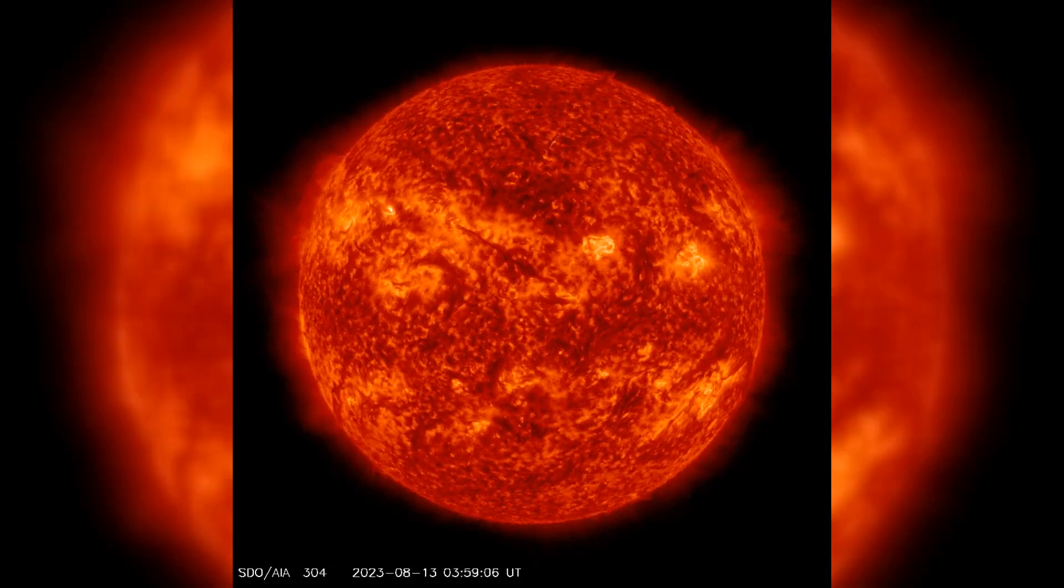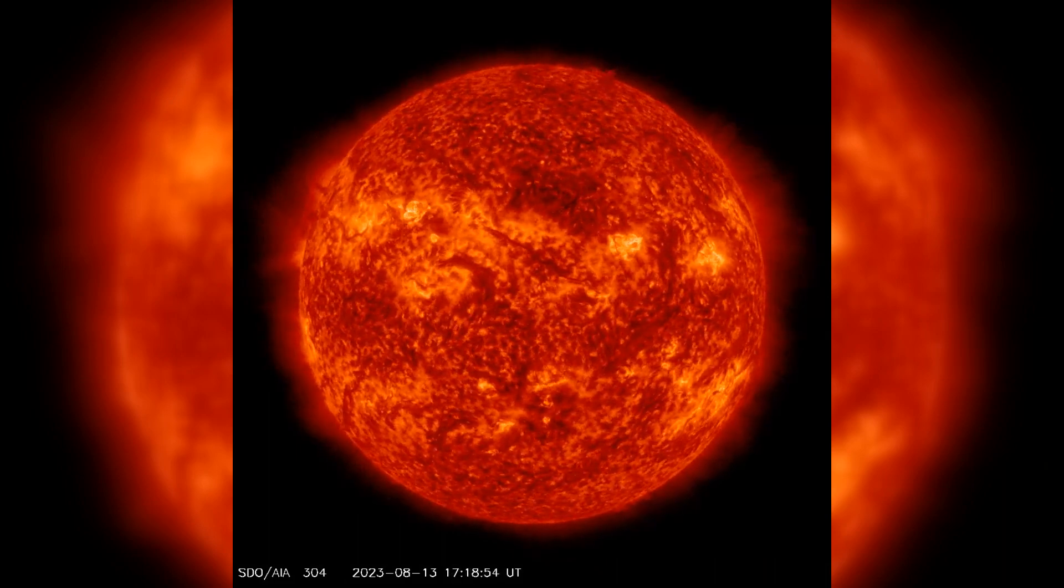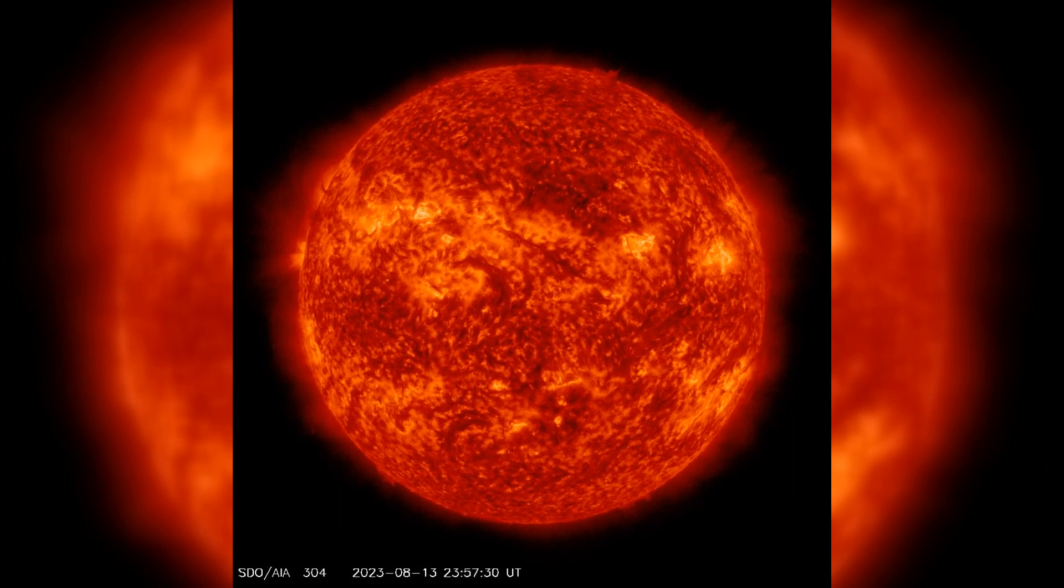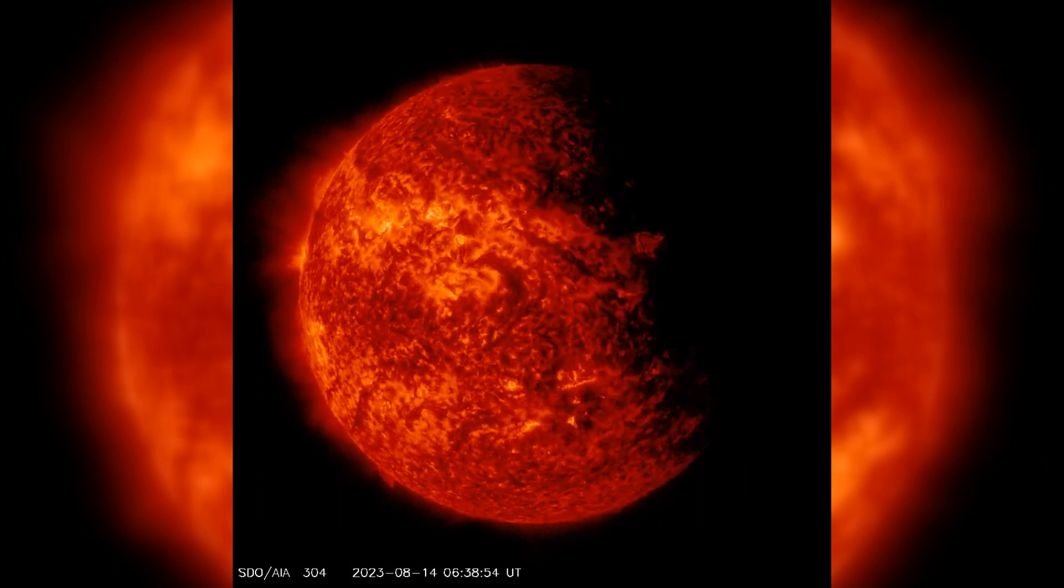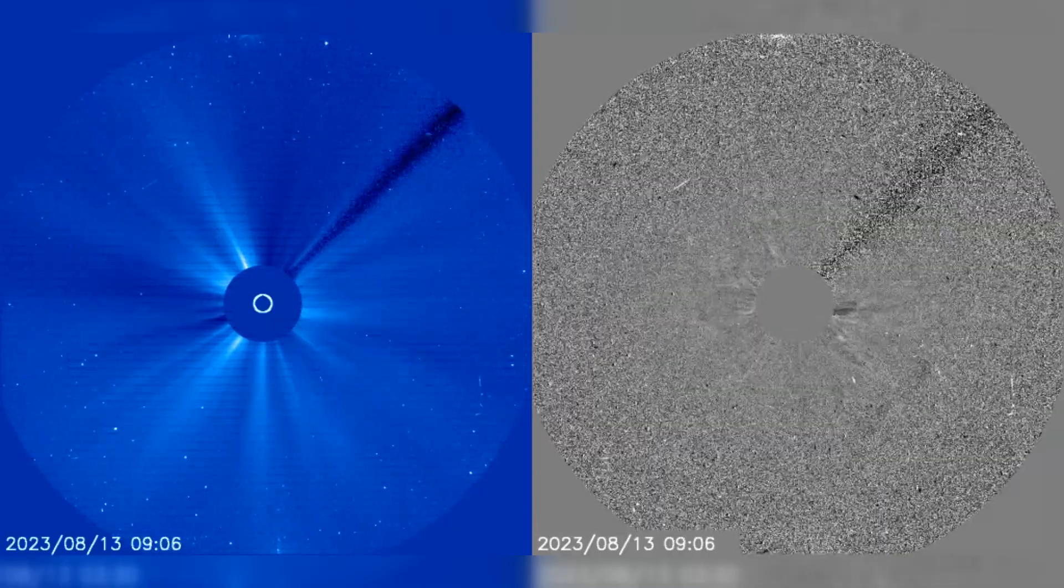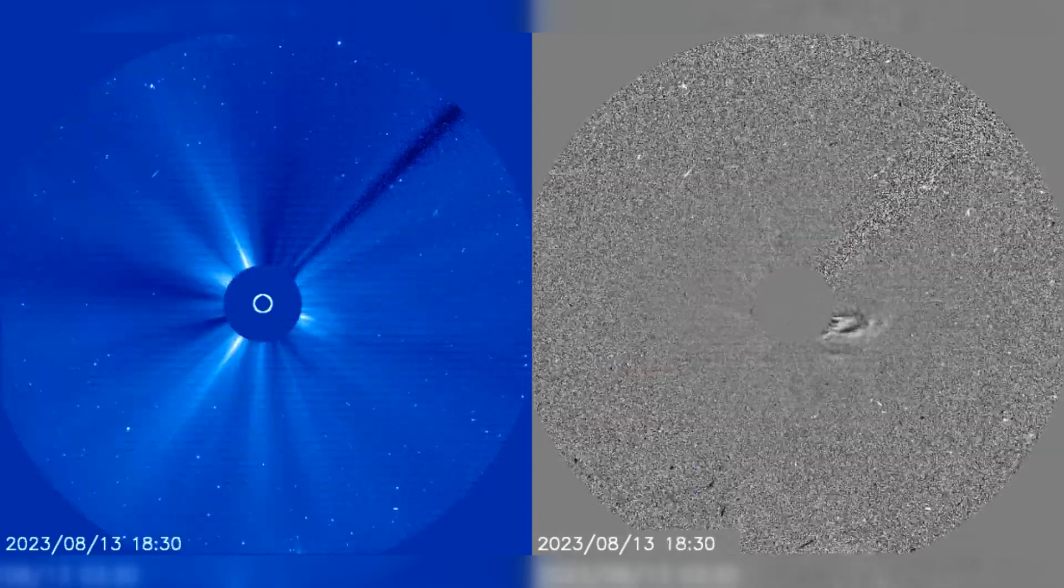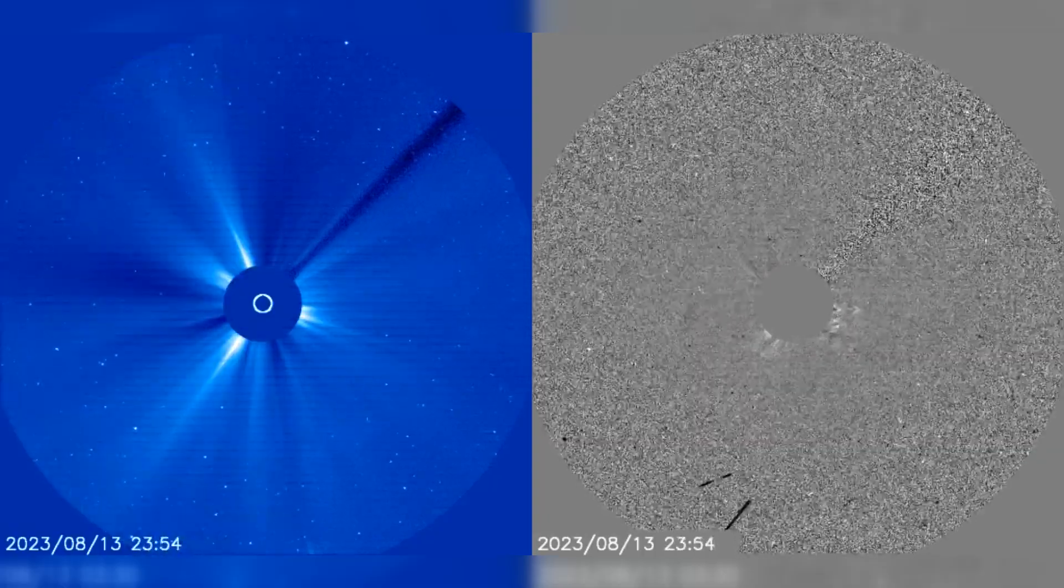A significant event unfolded as a small filament, about 10 degrees in length, began erupting on the 13th at 19:30 UTC. This eruption was followed by a coronal mass ejection detected from the southeast quadrant, commencing on the 13th at 22:24 UTC.